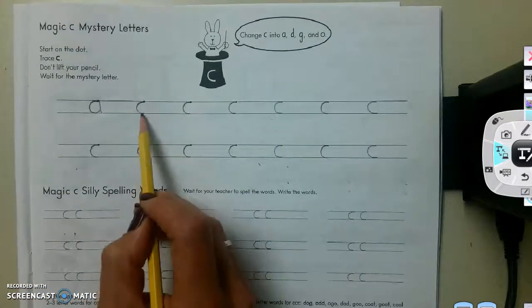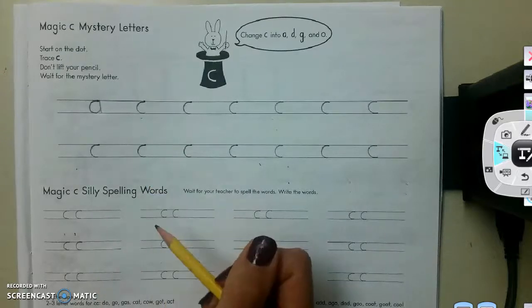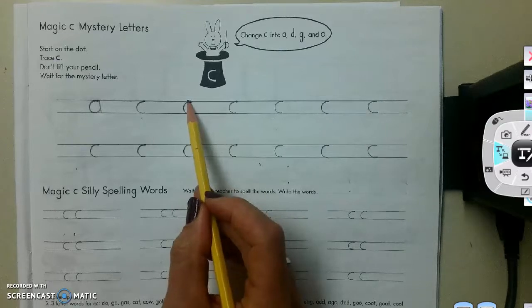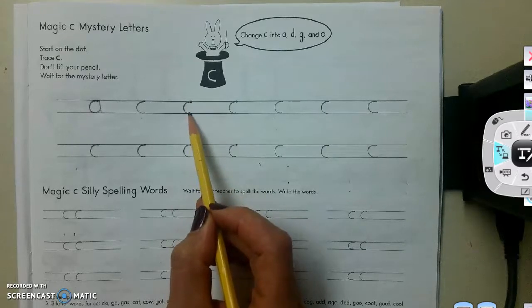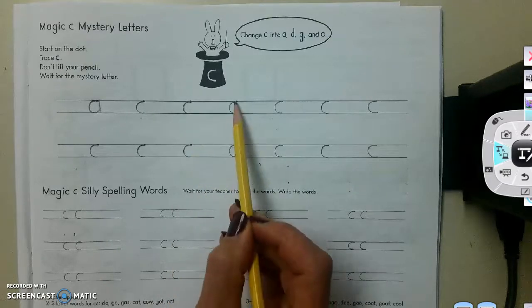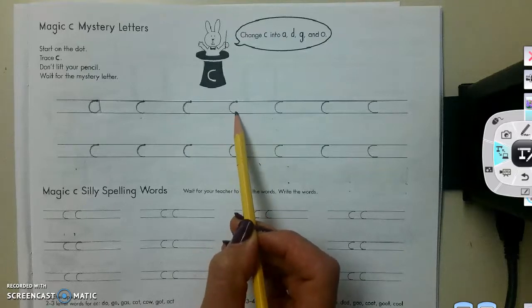Magic C. G. Okay, do this one. Magic C. D. Alright, again. Magic C. O.